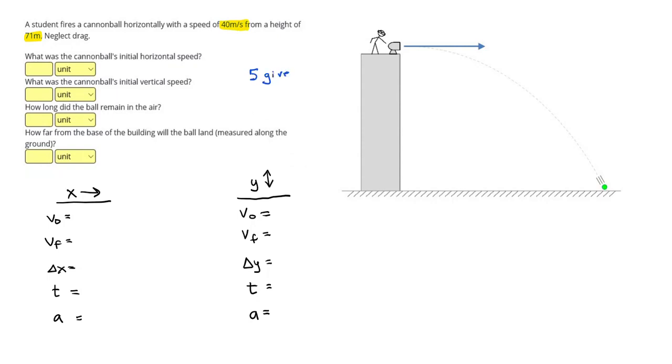So there, we need to find five given before we get started. Remember, we're going to break this up into the horizontal components and the vertical components.